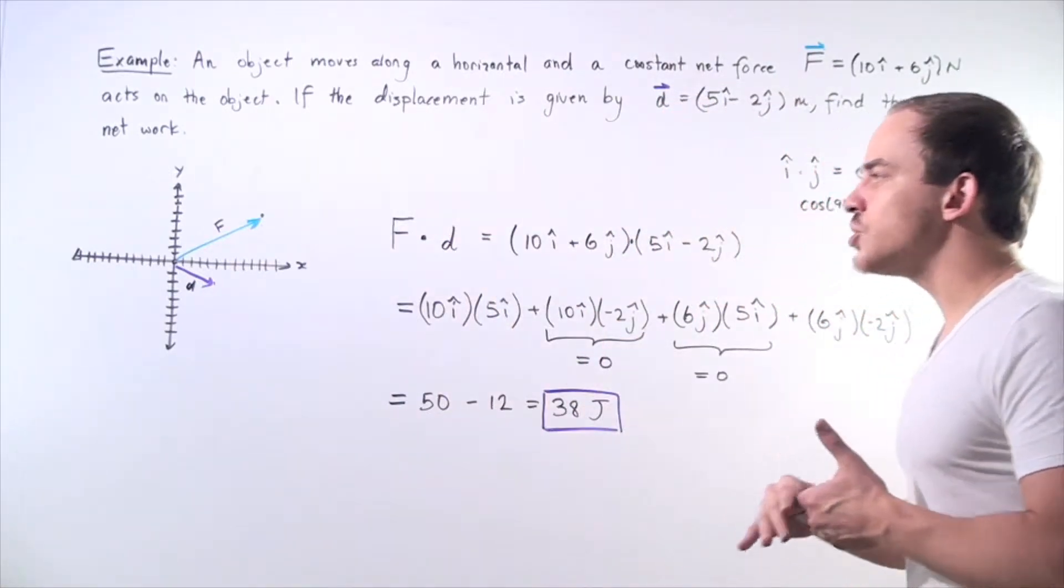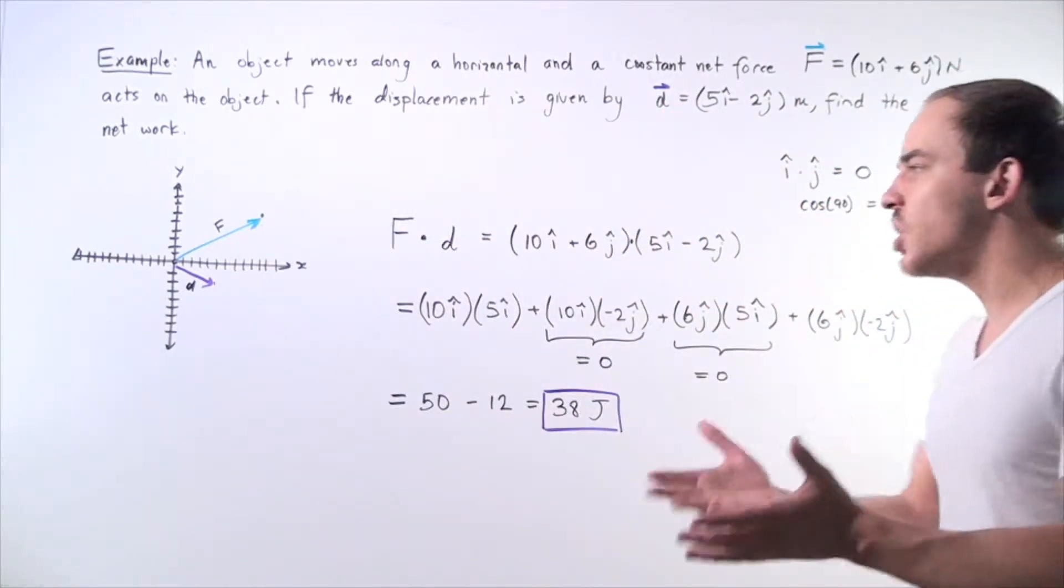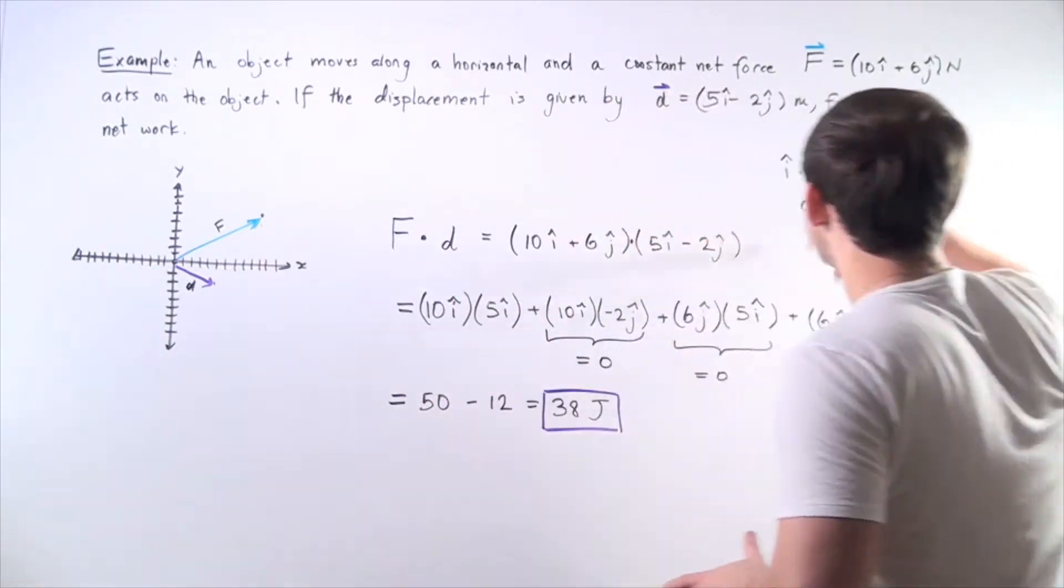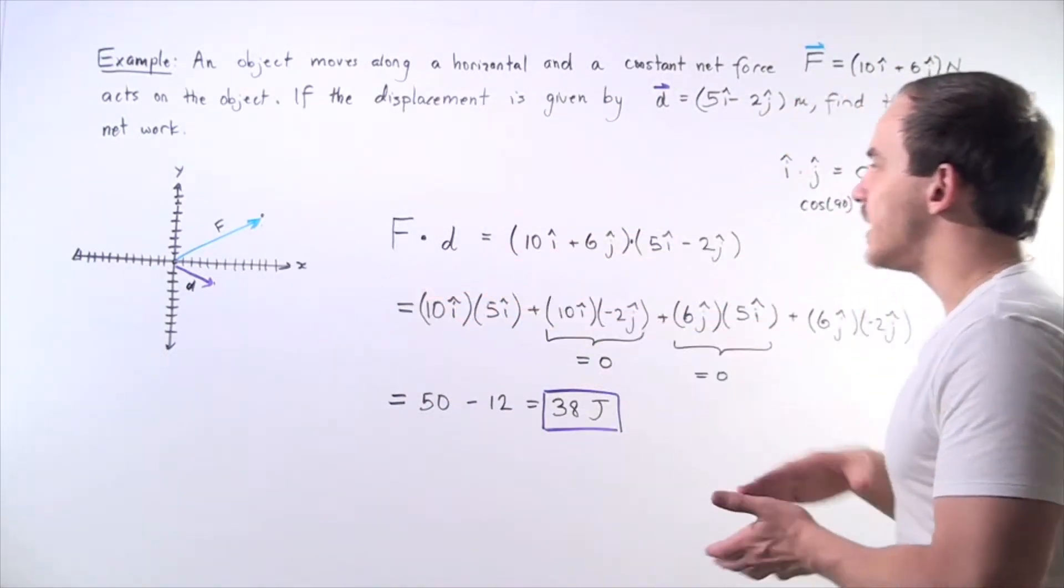But instead we're going to do it another way. We're simply going to take the dot product of our two vectors force and displacement vector.